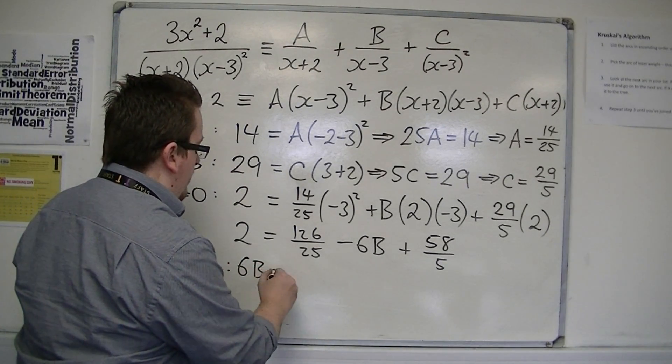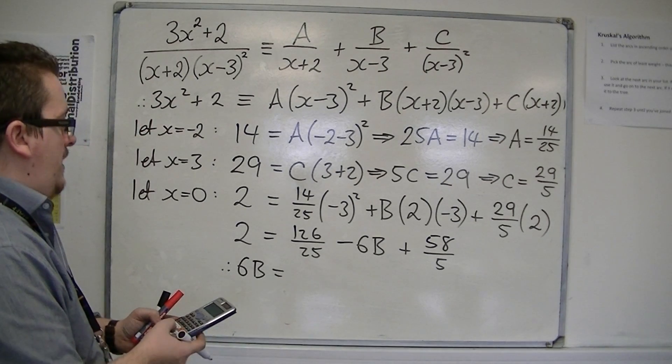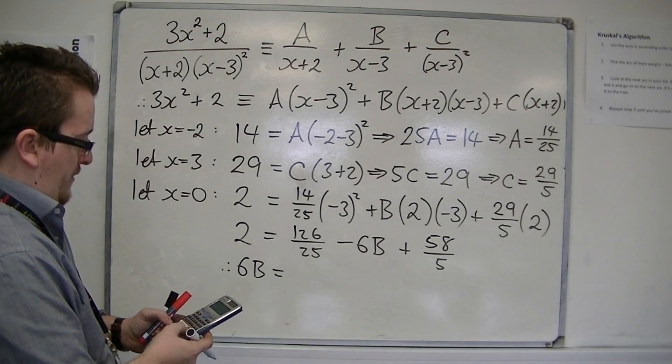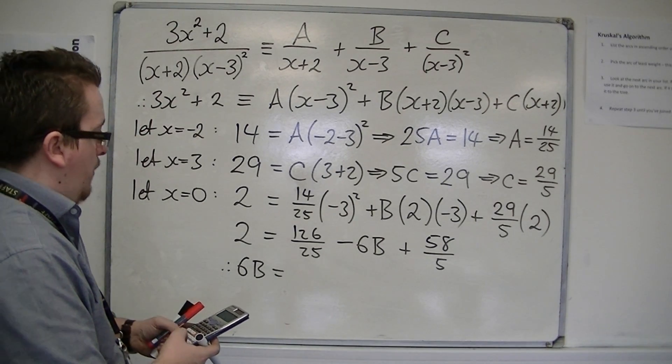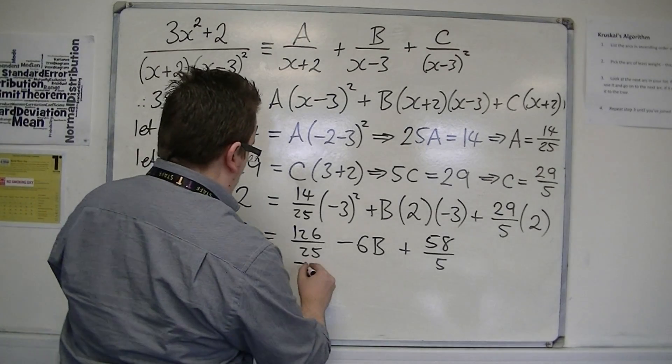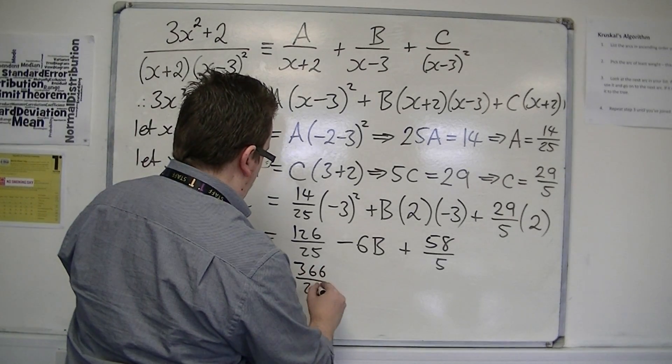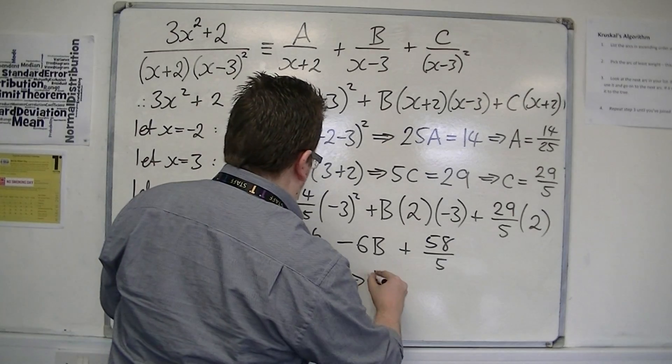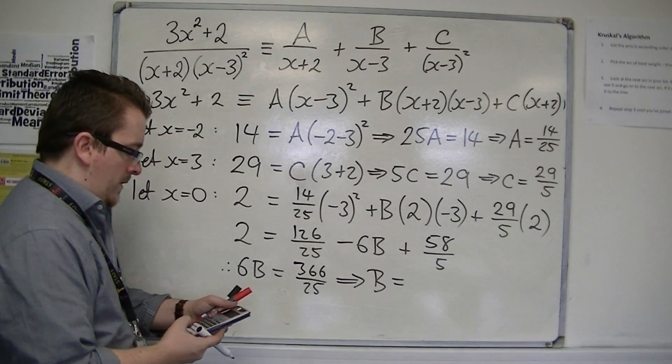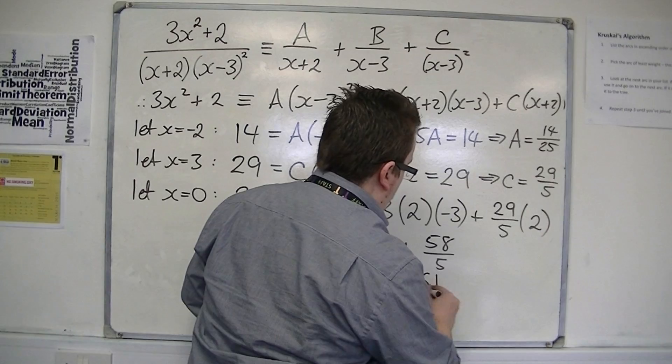So, 6B is going to be equal to, add those together, take the 2 away, so 366 over 25. So, B divided by 6 is 61 over 25.